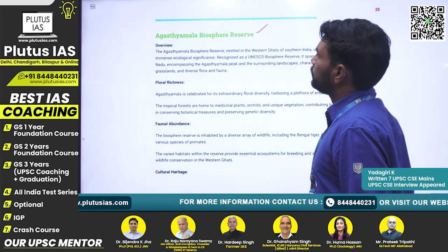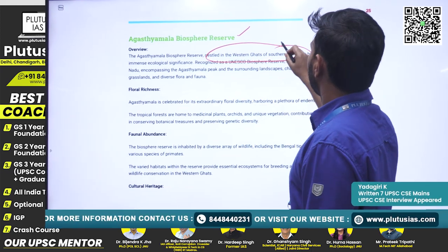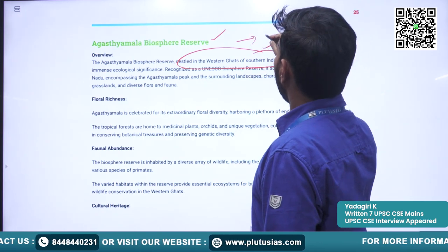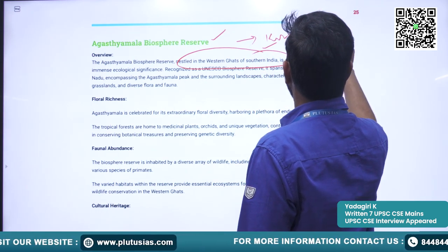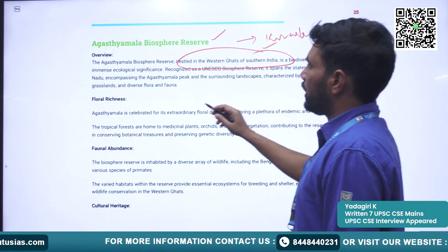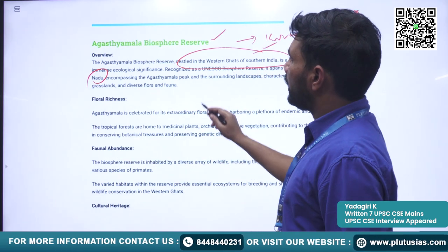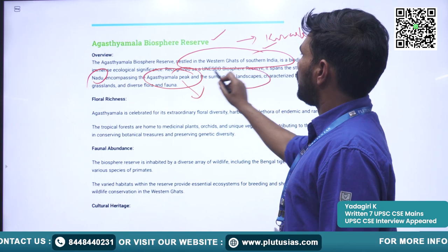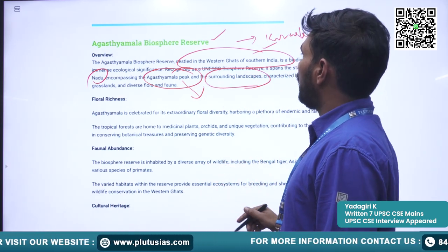Next is Agasthyamalai Biosphere Reserve. It is nestled in the Western Ghats of southern India, majorly located in Kerala, with some part also located in Tamil Nadu. It encompasses the Agasthyamalai Peak and surrounding landscapes, adding to its importance.